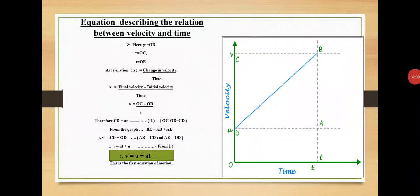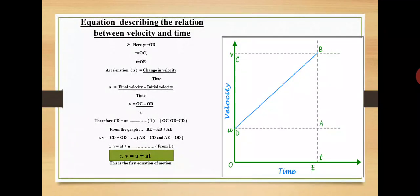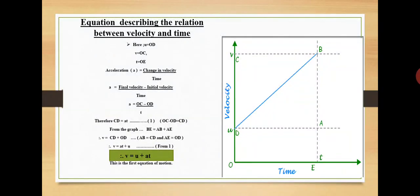Acceleration a is equal to change in velocity upon time, which is equal to final velocity minus initial velocity upon time. So a = (OC − OD) / t. Therefore, CD = at, since OC − OD = CD. Let this be equation number one.